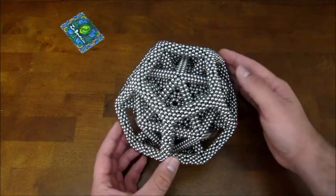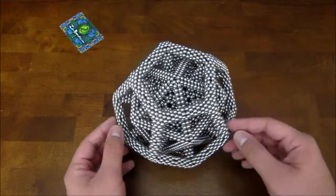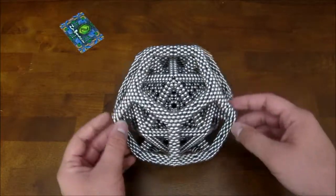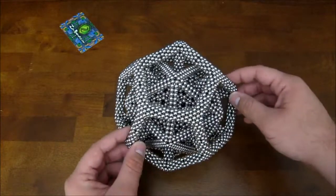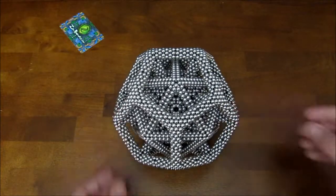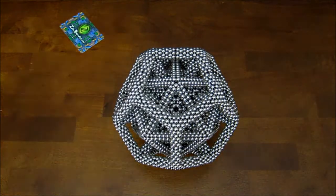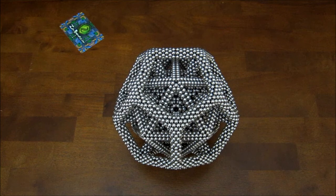And there you go. That is how you build the dual caged sphere. And I'm not going to smash this one because I want to reuse these pieces for my next tutorial video. So I'll smash it in that one.